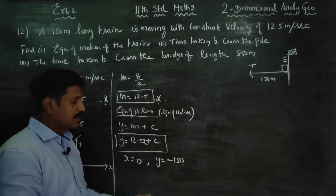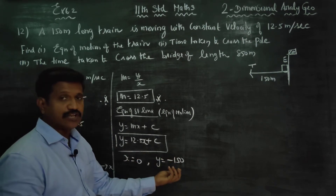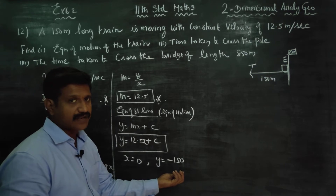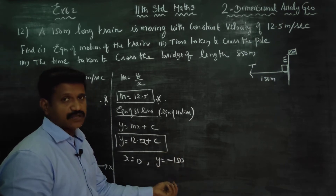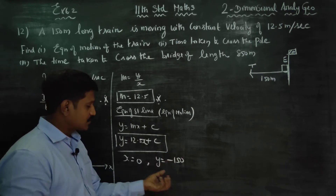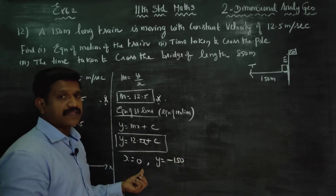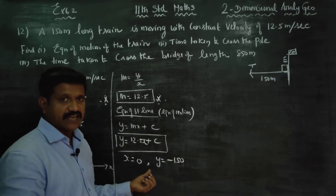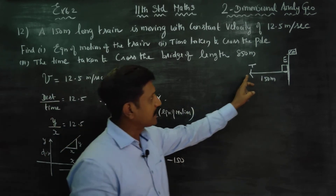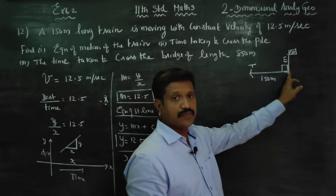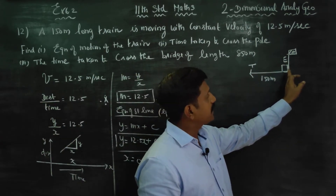T is equal to 1, T is equal to 2, T is equal to 3. Minus 150, minus 150, minus 100. At 10 seconds, 5 seconds - now the tail is down.